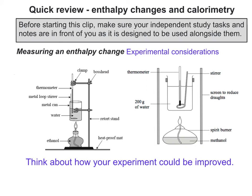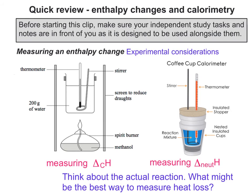The first experimental consideration is how your experiment could be improved — you can see an improved version on the right-hand side of the screen. The second consideration is the actual reaction itself: is it combustion, neutralisation, two liquids reacting, or a solid reacting with a liquid? There are different ways of measuring temperature change. A coffee cup wouldn't support combustion inside it, but you could put two reacting liquids in one and take precautions — as shown on screen — to minimise heat loss.